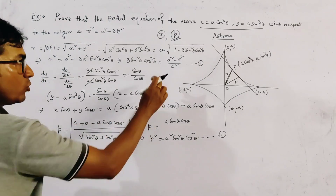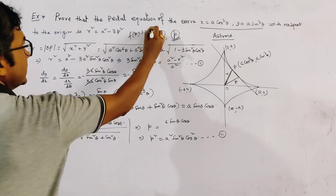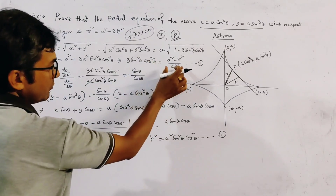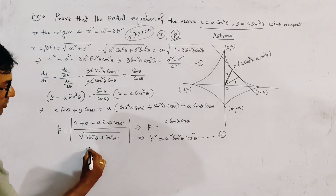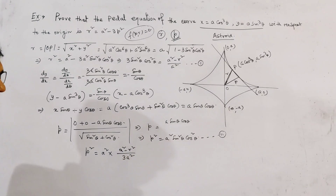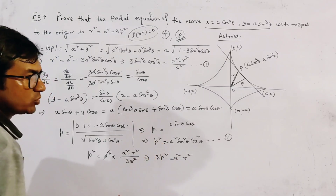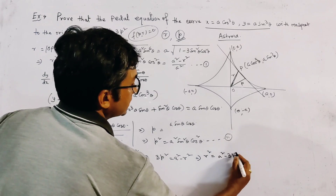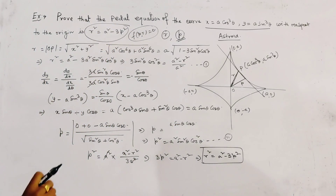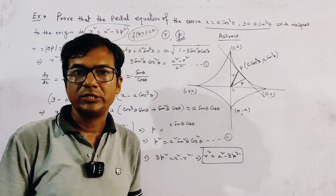Now we eliminate θ from relations 1 and 2 to get the relation between P and R — this is the pedal equation. Substituting sin²θ·cos²θ from relation 1 into relation 2, we get P² = a²·(a² − R²) / (3a²). Simplifying, a² cancels, giving 3P² = a² − R², and therefore R² = a² − 3P². This is the required pedal equation of the asteroid, and it is a very important result.